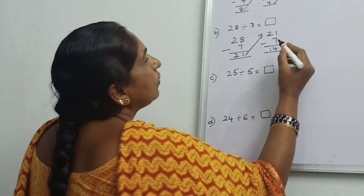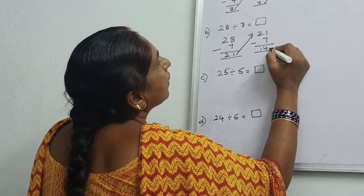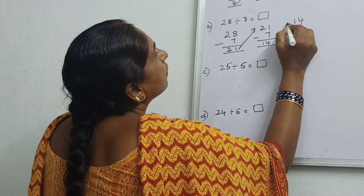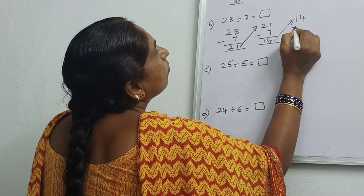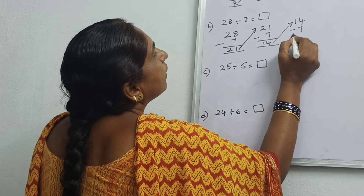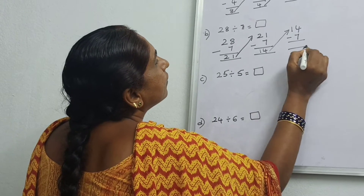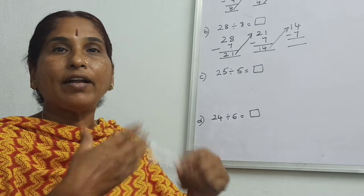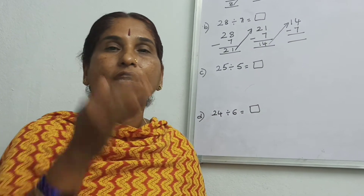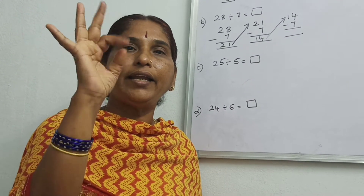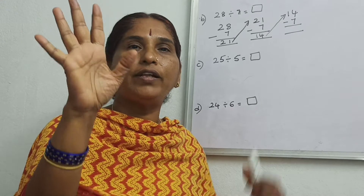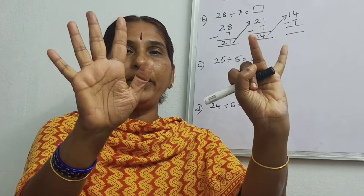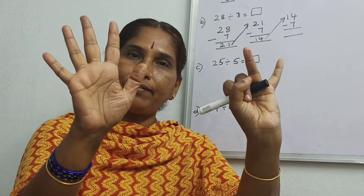Again you have to subtract this 14. 14 minus 7. Count again: 7 after — 8, 9, 10, 11, 12, 13, 14. How many? That gives 7.